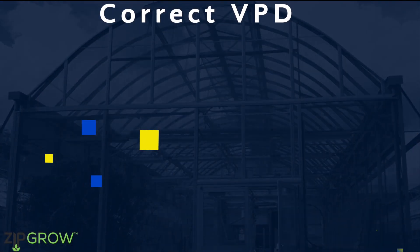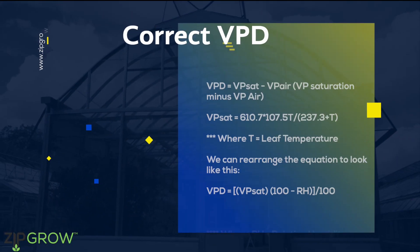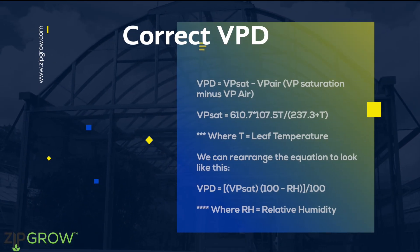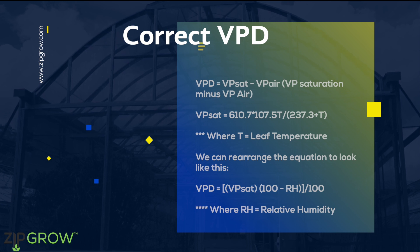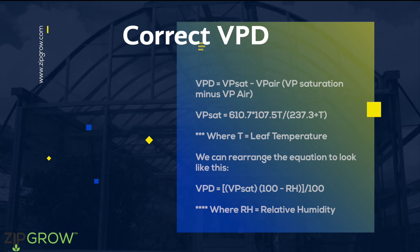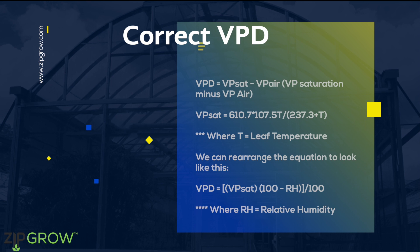It's important to have a correct VPD so that nutrients and water are moving through the plant at optimal levels. An incorrect VPD in your environment can also lead to decreased yields and significant crop losses due to deficiencies.